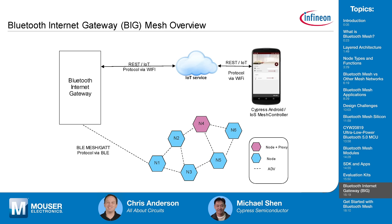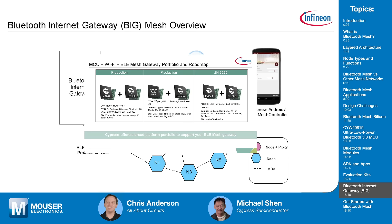Although Bluetooth mesh doesn't require a gateway since mobile devices connect directly, remote cloud connectivity is sometimes needed. When you're away from home or work, you still want to manage your devices through the cloud. Cypress is the only company offering both a mesh solution and an internet gateway solution. One option is the 43907 MCU plus Wi-Fi combo, which can be attached to any Bluetooth mesh-enabled device for a quick path to market.